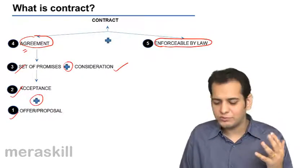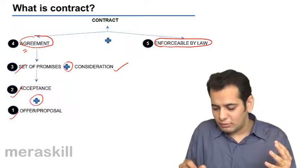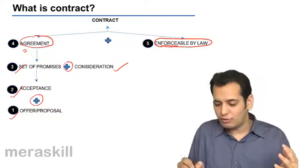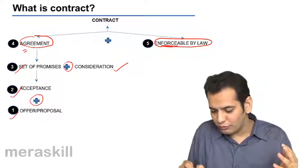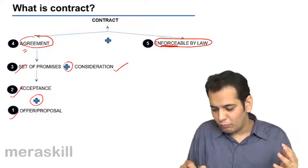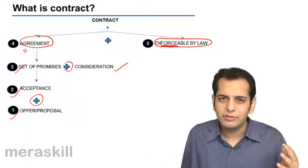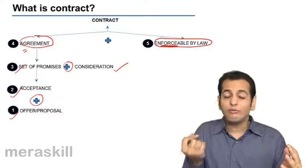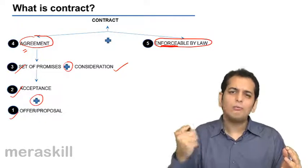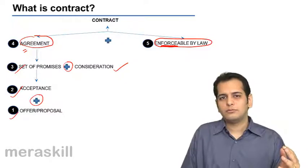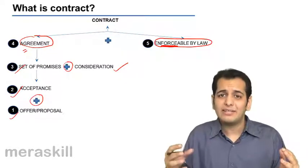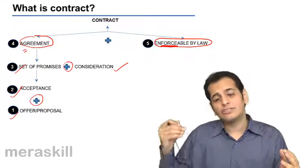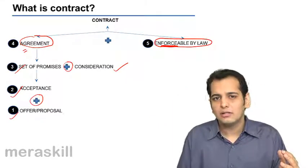What do you mean by enforceability of law? Enforceability means the backing of law, the force of law — you can see the word 'force' in the word 'enforceability'. When this agreement gets the force of law, the support of law, the backing of law, we can say that this agreement has now reached the stage of becoming a contract.